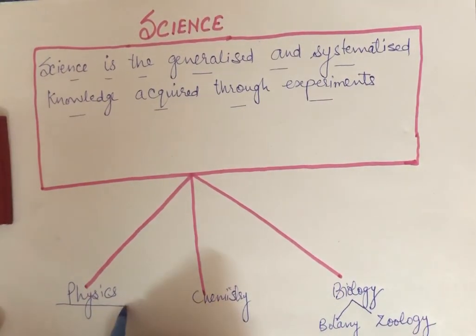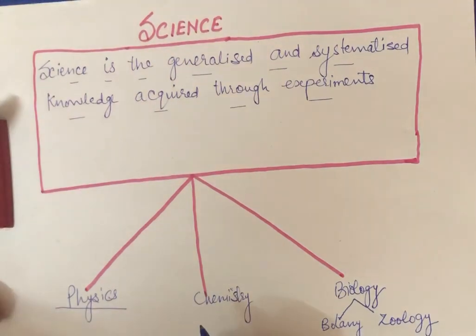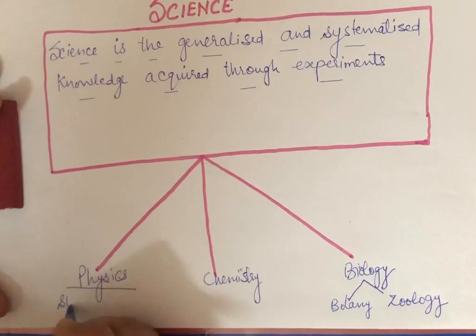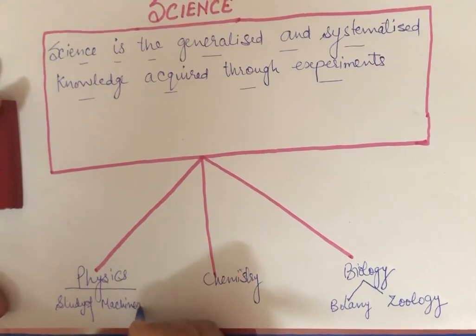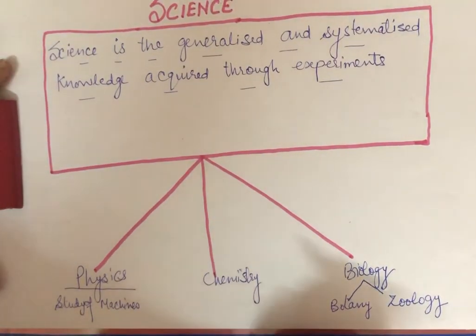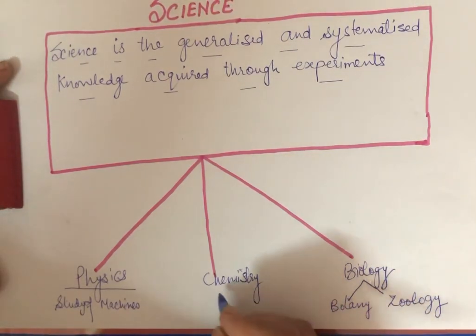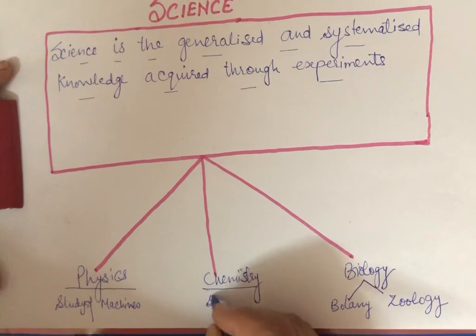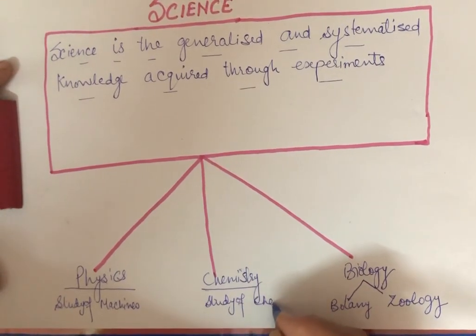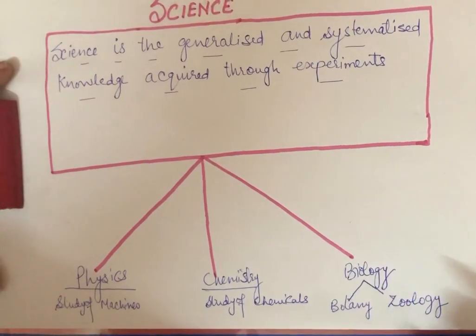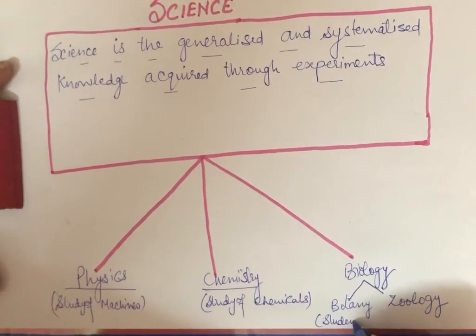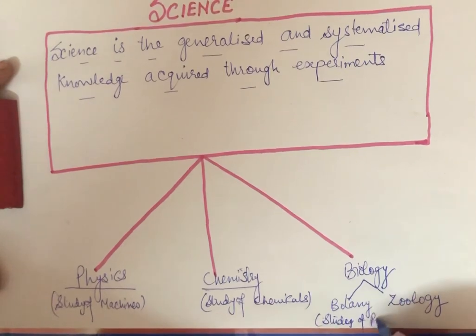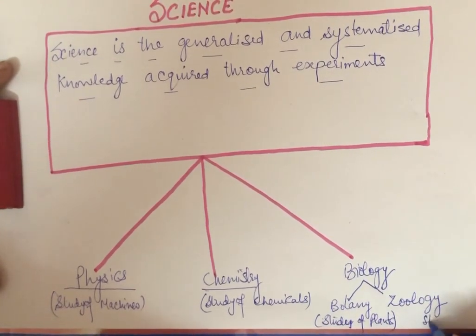Now what is Physics? Simply, it deals with the study of machines. And Chemistry deals with the study of chemicals. Botany deals with the study of plants. And Zoology is the study of animals.